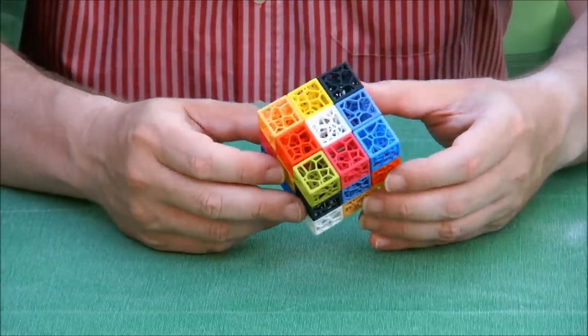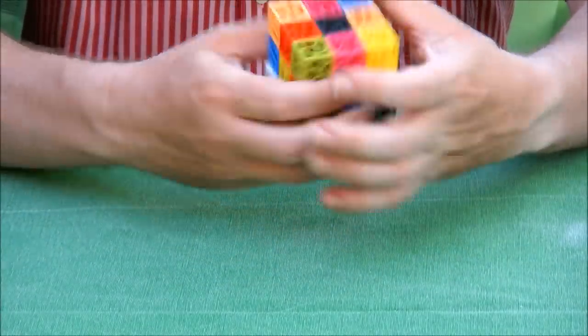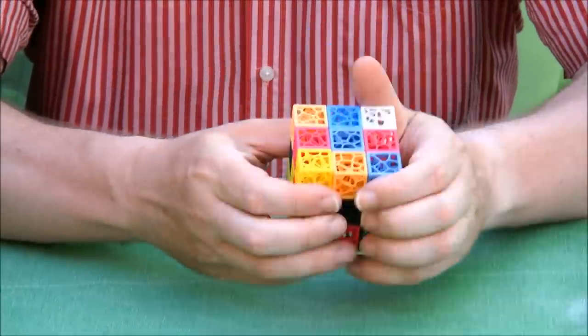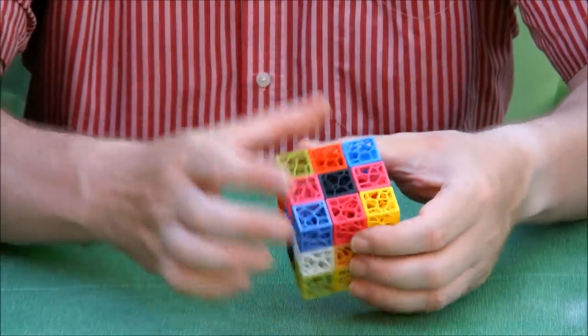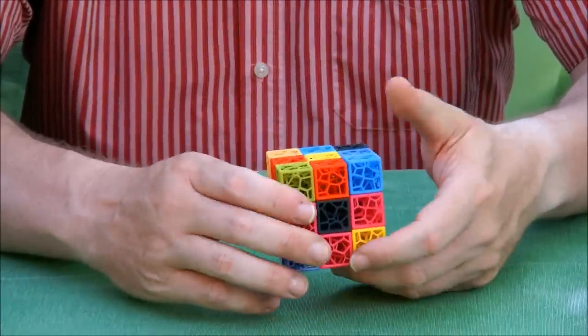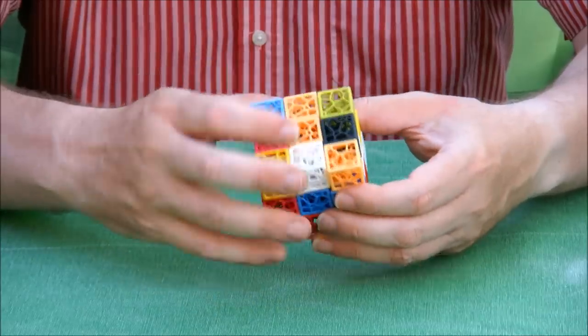You can see the puzzle is solved now, so let me try and scramble it. After just a few turns, it's completely scrambled. We have three pinks in a face, two blues, and three orange.